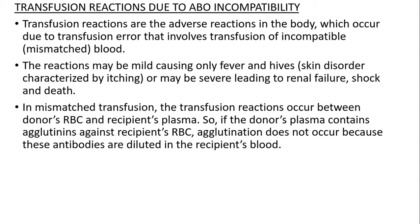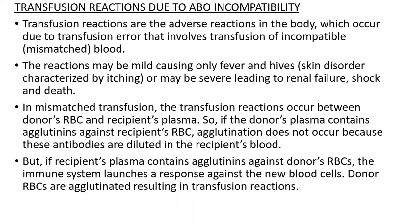The donor's plasma contains agglutinogens against recipient RBC, and agglutination does not occur because these antibodies are diluted in the recipient's blood. But the recipient's plasma contains agglutinins against the donor's RBC, and the immune system launches a response against the new blood cells. The donor RBCs are agglutinated, resulting in transfusion reaction.